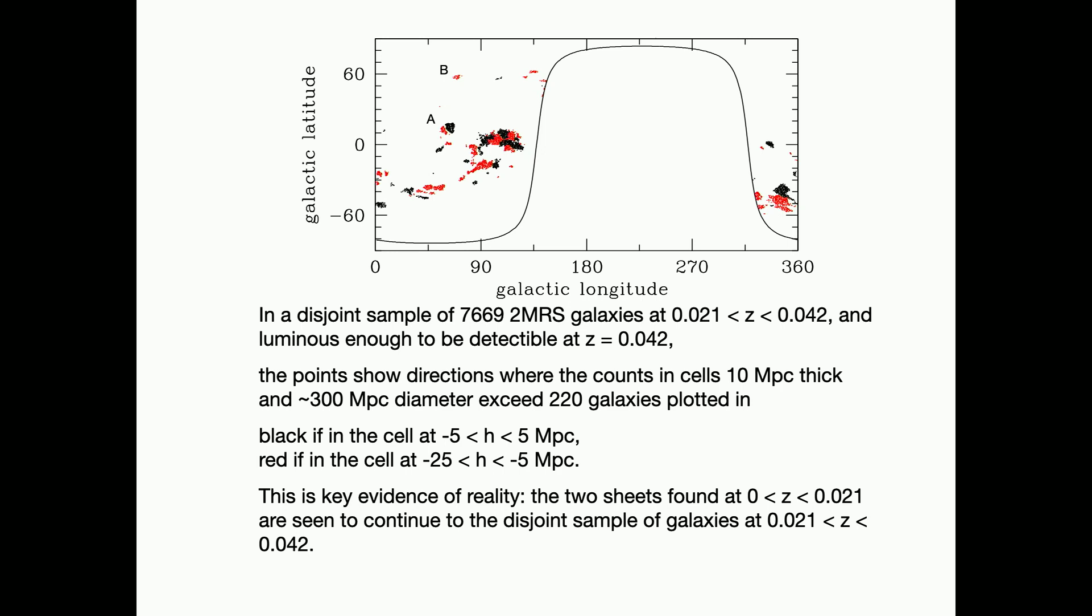Here is 10 megaparsecs thick now, not five, and 30 megaparsecs across that 150. So they're bigger, but they're still very thin, relative to their widths, and where does the count exceed 220? You see that if the distance from the origin is zero, you plot in black, if you see the distance from the origin is 15 megaparsecs, you plot in red, and you see here is sheet B, and here is sheet A. It's reproduced.